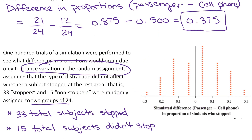Now let's look at a simulation the researchers did. 100 trials of a simulation were performed to see what difference in proportions would occur due to only chance variation in random assignment — with the assumption that the type of distraction has no effect on whether the subject stopped at the rest area. In our study, out of the 48 students, 33 were stoppers and 15 were non-stoppers. Part B asks us to consider the three dots at the end at 0.29.